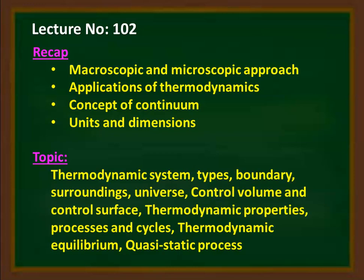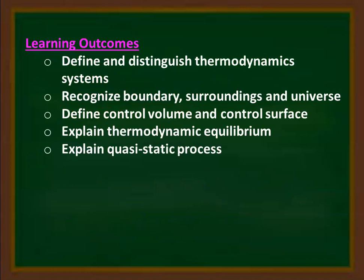In this lecture, we are going to enter into thermodynamics. We will define the thermodynamic system and types of systems, define boundary, surrounding, universe, control volume, and control surface. We will define thermodynamic properties, processes, cycles, thermodynamic equilibrium, and quasi-static process. The learning outcome: at the end of the lecture, the student will be able to define and distinguish thermodynamic systems, recognize boundary, surrounding, and universe, define control volume and control surface, explain thermodynamic equilibrium, and explain the quasi-static process.